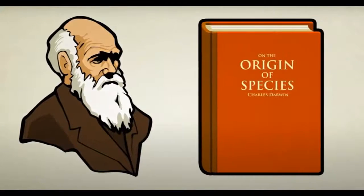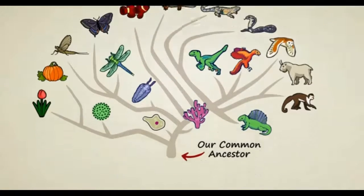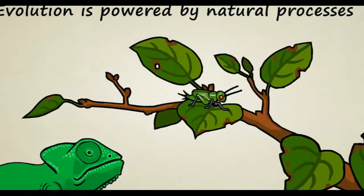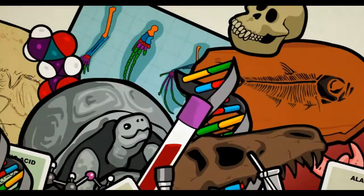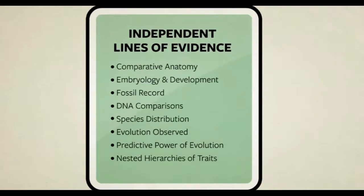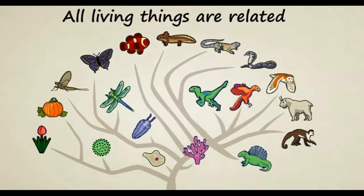The theory of biological evolution makes two very bold claims about living creatures. First, all living things on earth are related — they evolved from a common ancestor. Second, the evolution of living things is powered by natural processes, things which can be studied and understood. Is there really any evidence that these two claims are true? Yes. There are so many observable facts from so many different fields of study that we can only begin to talk about them by grouping them into categories or lines of evidence.